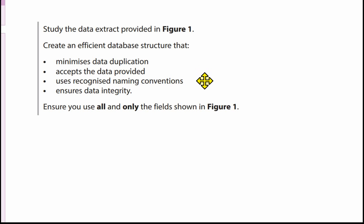Using recognised naming conventions means we use the TBL prefix for naming tables, and we also have a standard format for field names. Ensuring data integrity means we need referential integrity between the tables — for example, we can't create a rental for a tenant that doesn't exist, or a rental for a property that doesn't exist in the database.